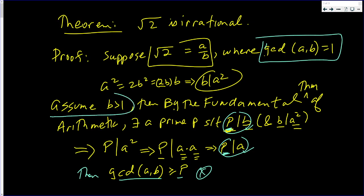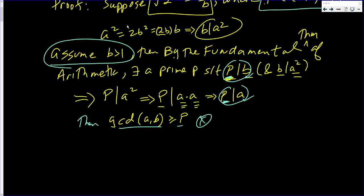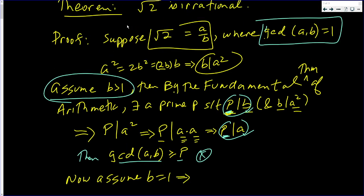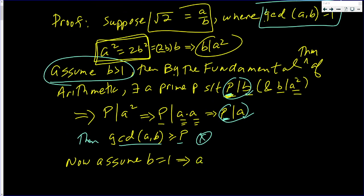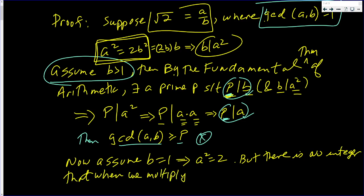Now, we made an assumption that b was greater than 1. Now assume that b is equal to 1. That implies from right here that a squared is equal to 2.